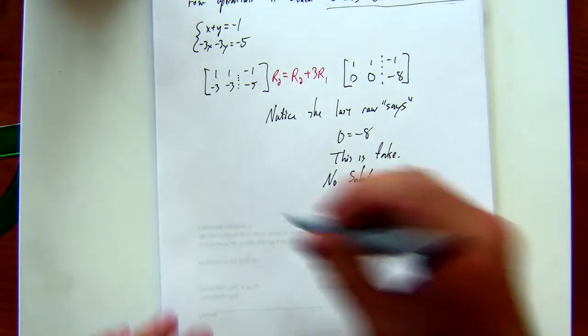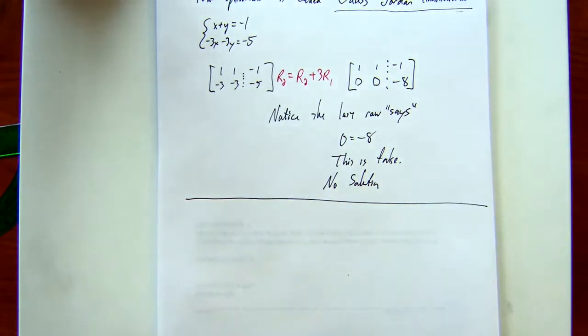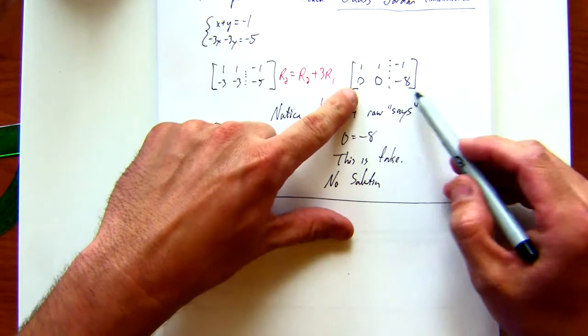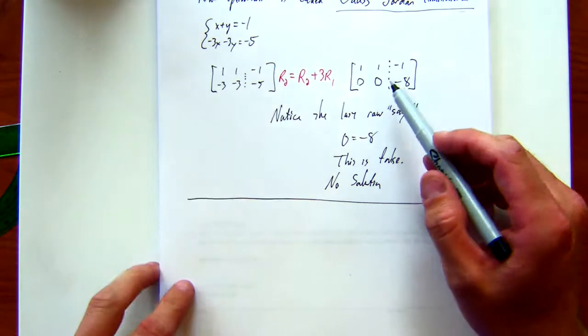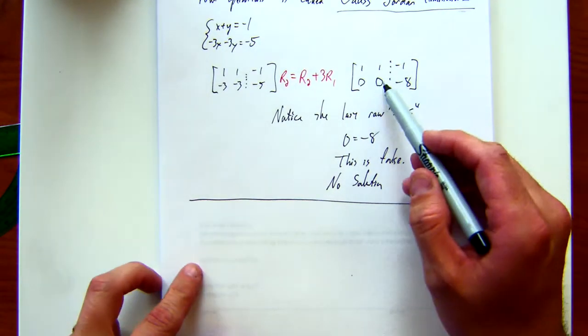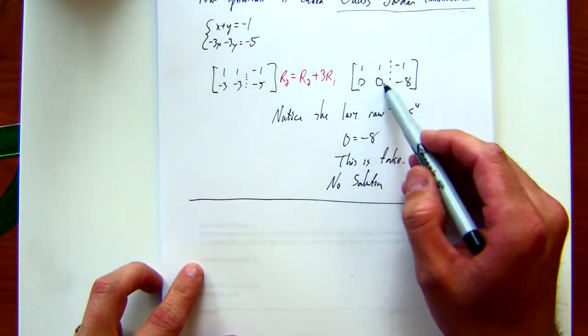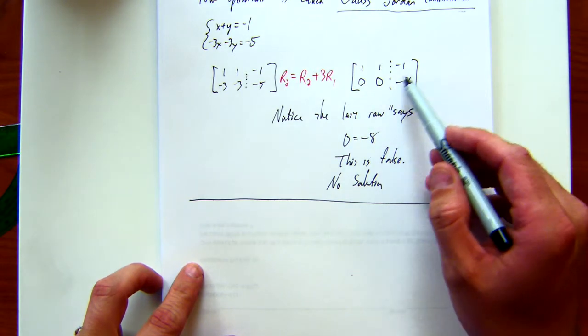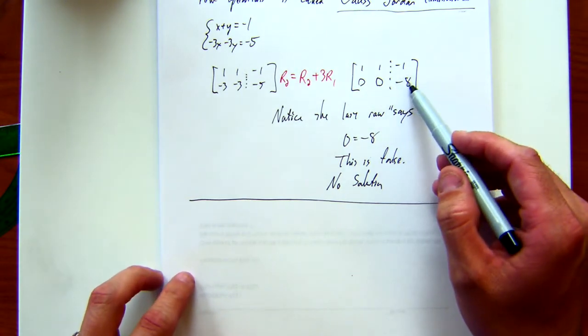Any questions? So you have to look out for something like this, right? If you get, when you're doing Gauss-Jordan elimination and you get all these guys go away and then you get some number over here. Okay?